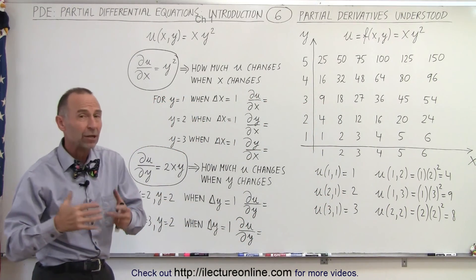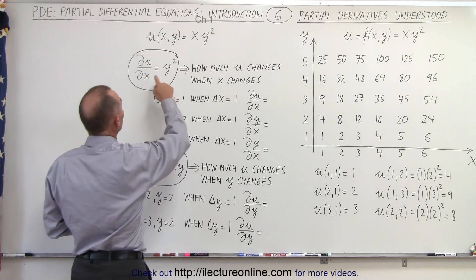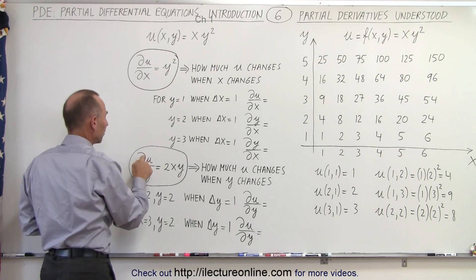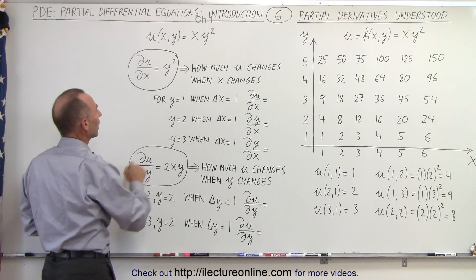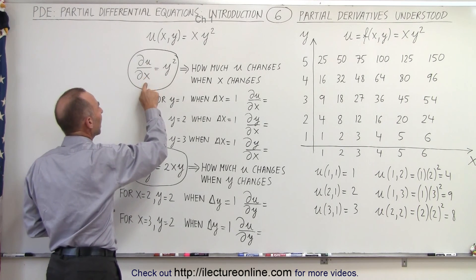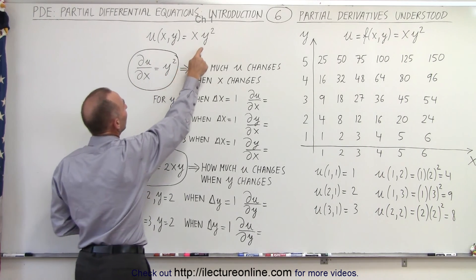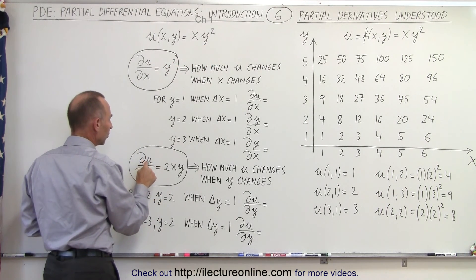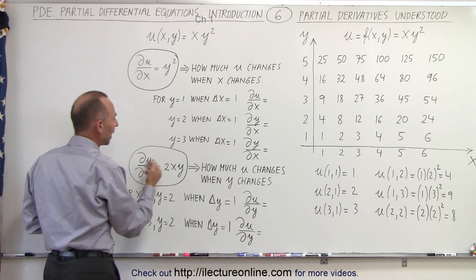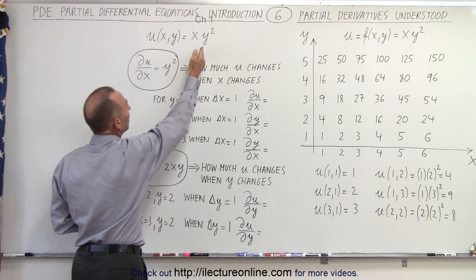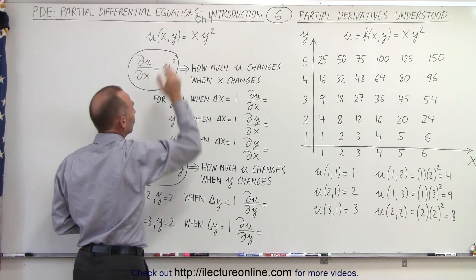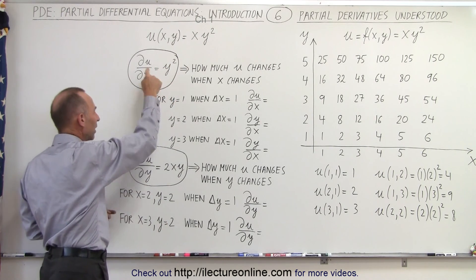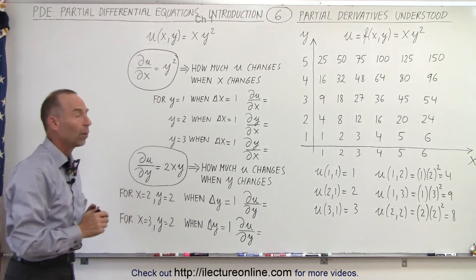Now, what happens when we take the partial derivative of our function with respect to x and with respect to y? When we take it with respect to x, y becomes a constant, so the result is simply y squared. When we take it with respect to y, x is constant, giving us 2xy. So these are the two partial derivatives: one with respect to x and one with respect to y.